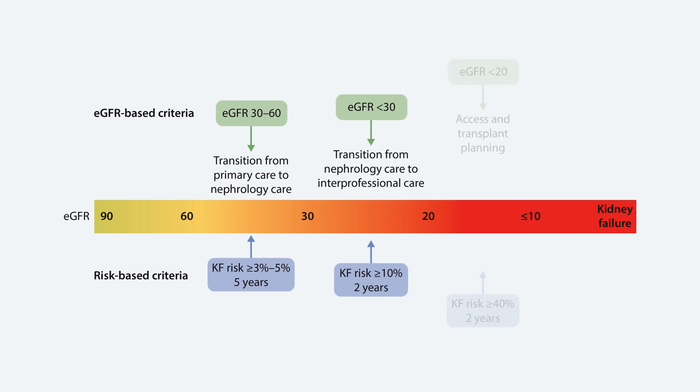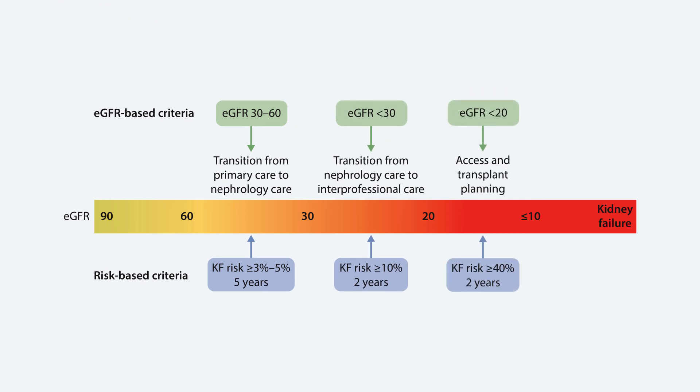There are two number-based answers. When the GFR is under 30, a referral is recommended. When the urine albumin is over 300 milligrams per gram of creatinine — that's severe albuminuria — those patients need evaluation.